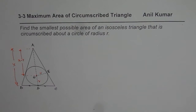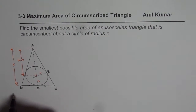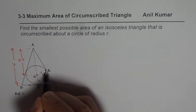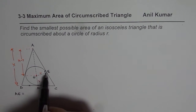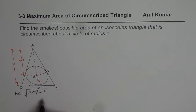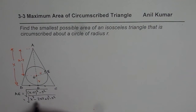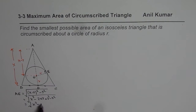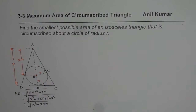Now, AO is X minus R. We can find AE using the right triangle. AE, the hypotenuse, equals the square root of (X minus R)² minus R². Expanding this, we get the square root of X² minus 2XR plus R² minus R², which simplifies to the square root of X² minus 2XR. So that is AE.